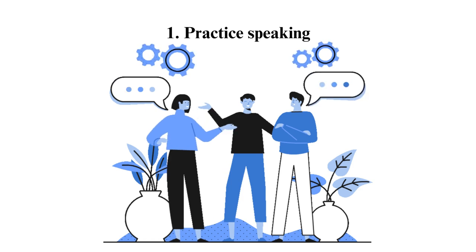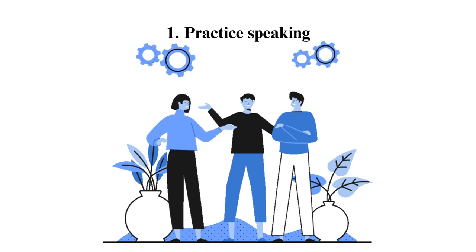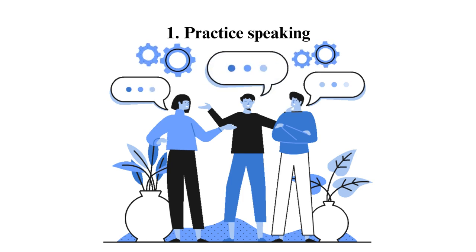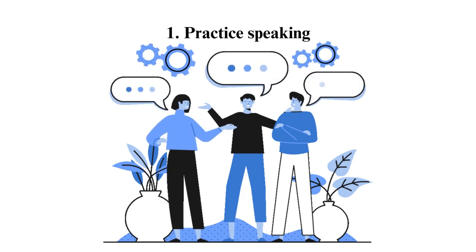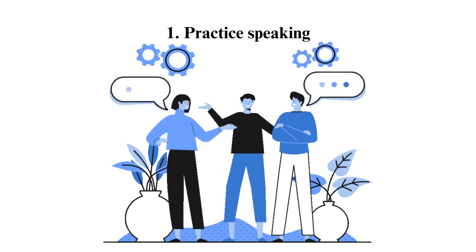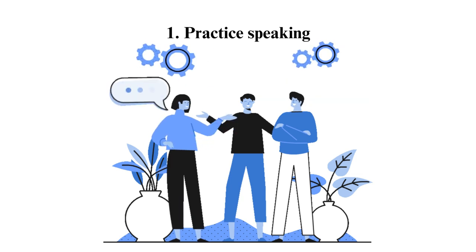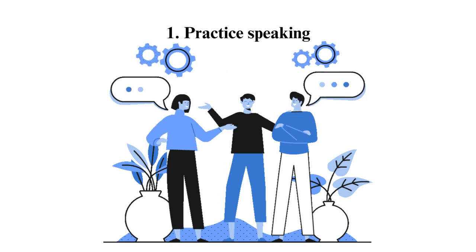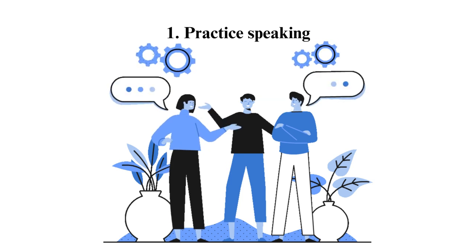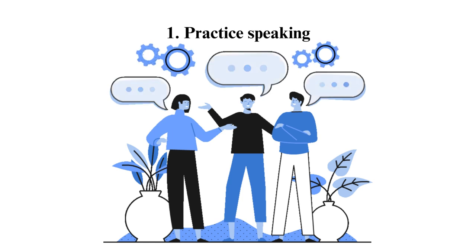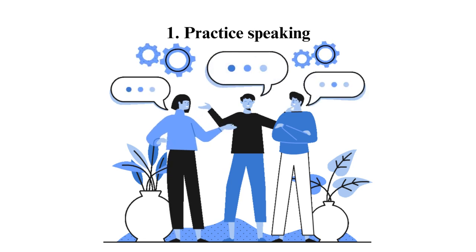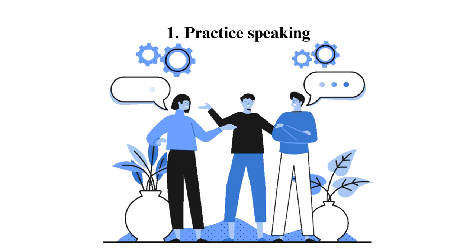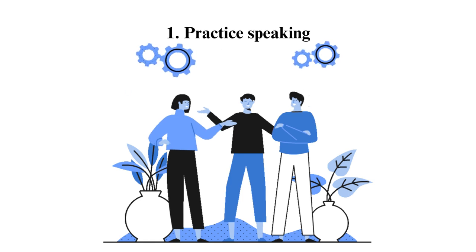1. Practice speaking. Practice makes perfect applies to most things, including public speaking. Doing so, especially in front of a mirror or on camera, allows you to act as if you are indeed giving a speech. Once you find a suitable topic, you may present your speech to your friends and family and have them provide feedback on what to change — for example, if your voice is cracking at some points or you are shuffling around on your feet.